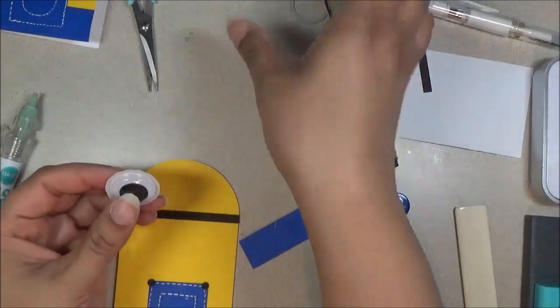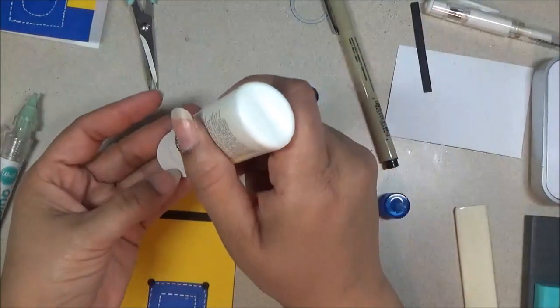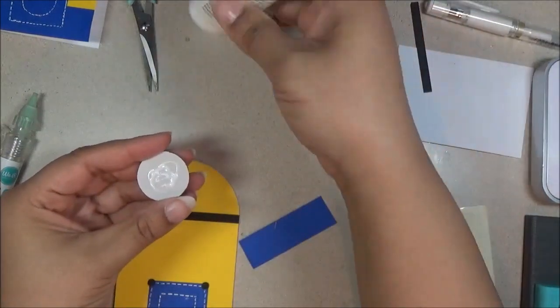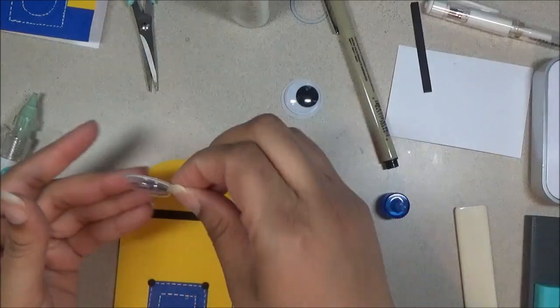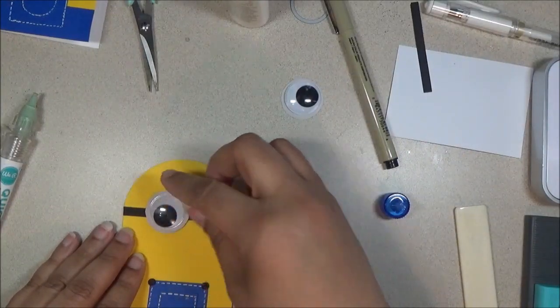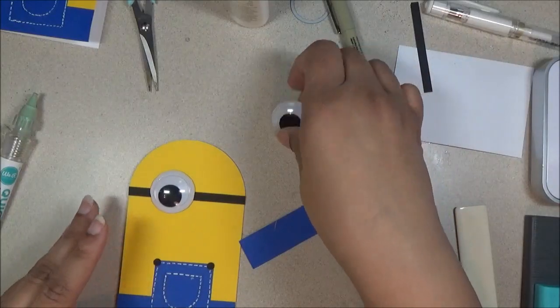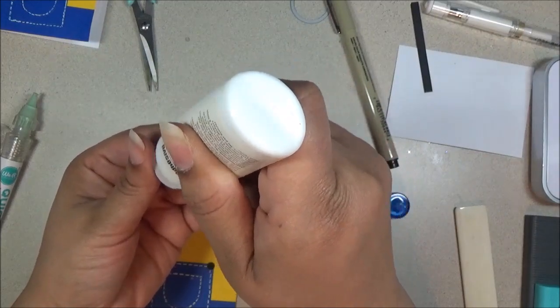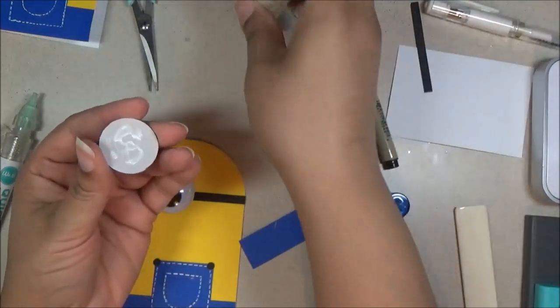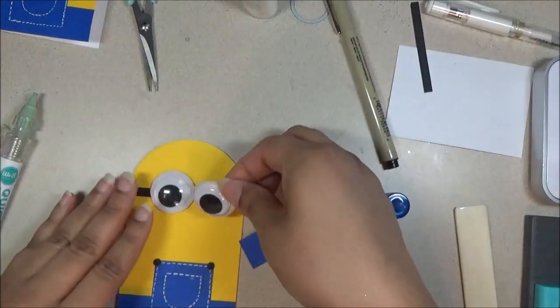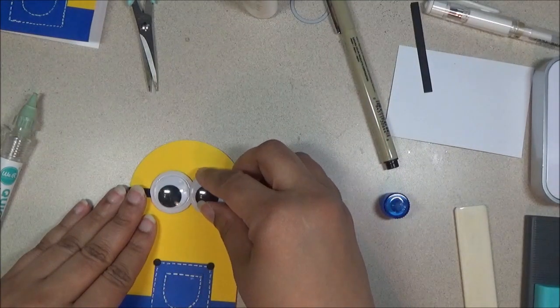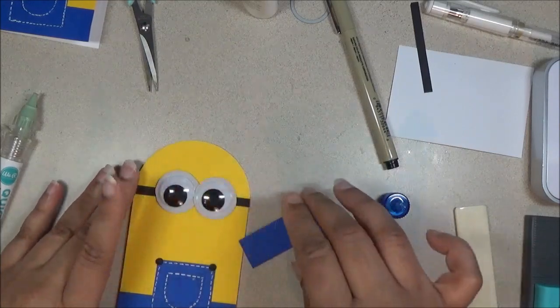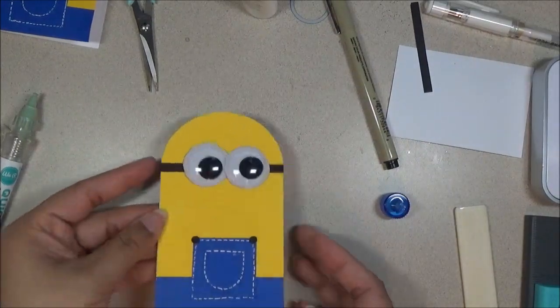Then for the eyes I'm going to glue on one and then you're going to kind of overlap the goggles. Okay. This is what I have so far.